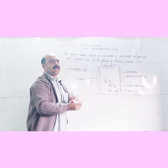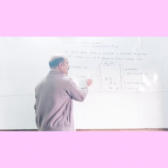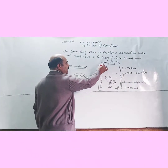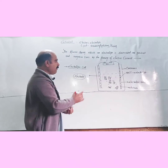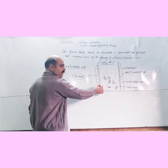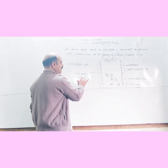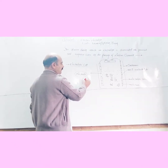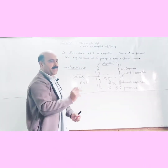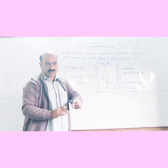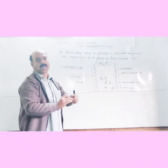The electrode which is connected to the positive terminal of the battery becomes positively charged and is called the anode. The electrode connected to the negative terminal of the battery becomes negatively charged and is called the cathode.